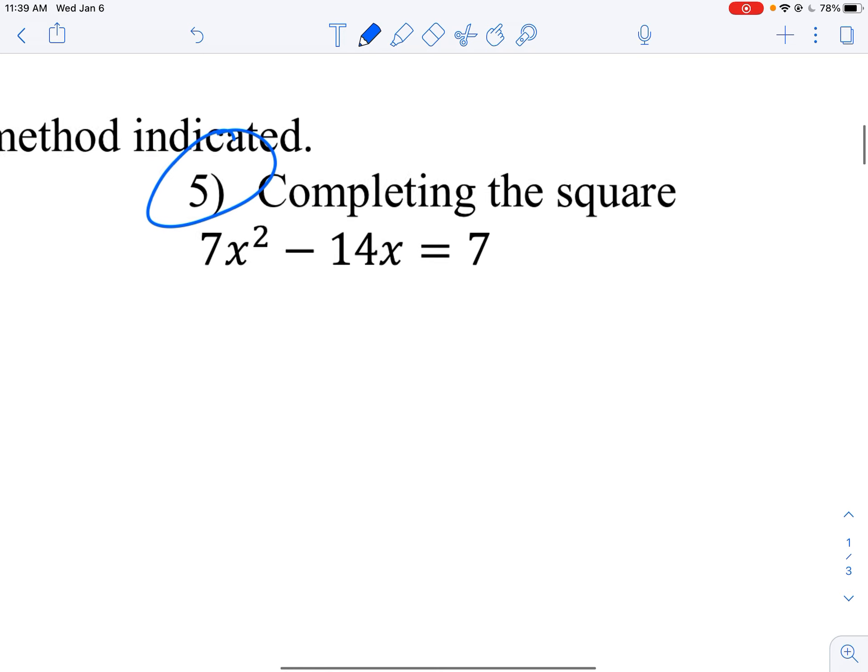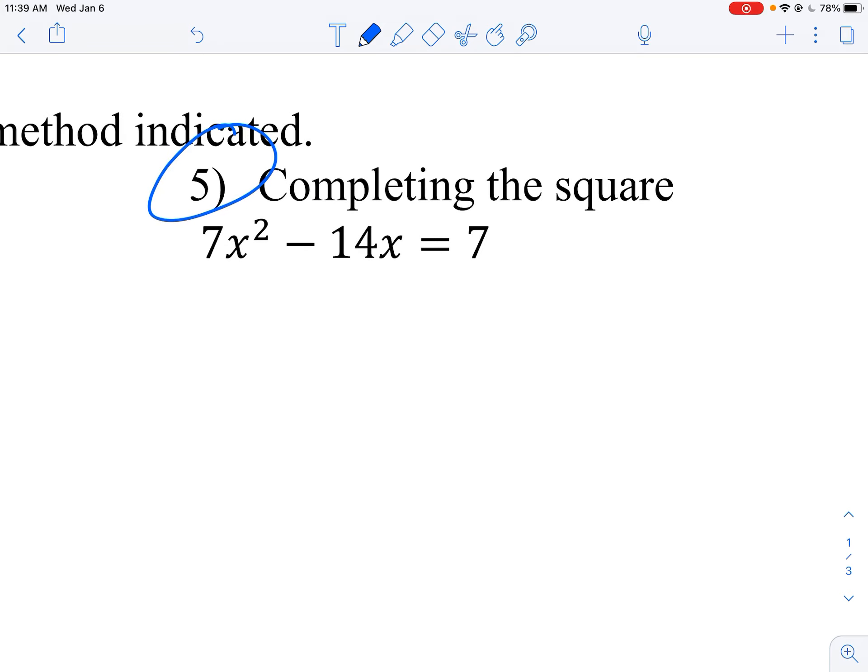And then there's this one, completing the square. I want to focus on completing the square because sometimes people forget it. We don't use it that much. So we're going to complete the square here. What you want to do is make it equal zero by subtracting 7. Now we got 7x² minus 14x minus 7 equals 0. To complete the square, you do have to divide it so there is no number in front of x². So we're going to divide everything by 7. So now I got x² minus 2x minus 1 equals 0.